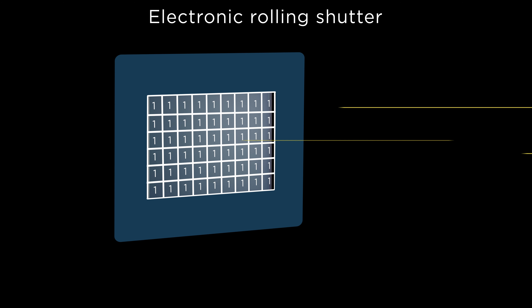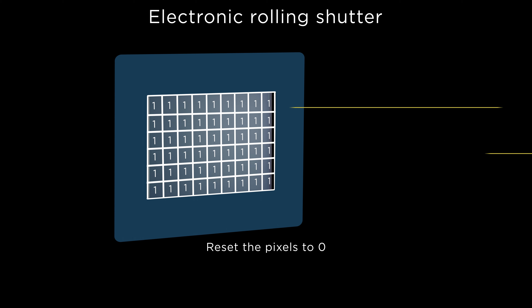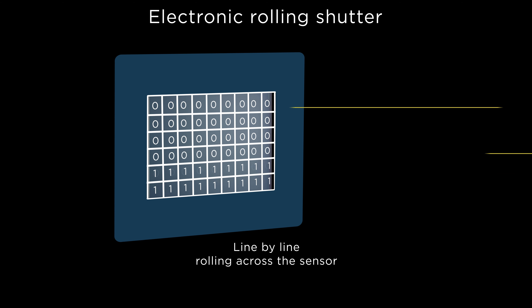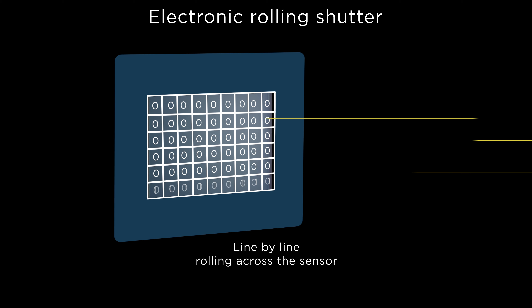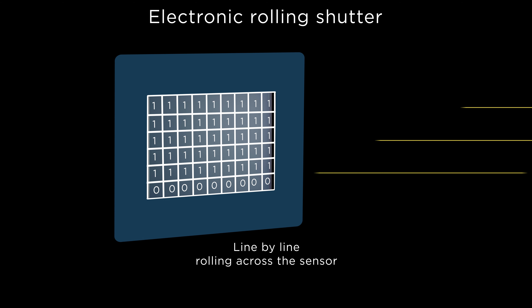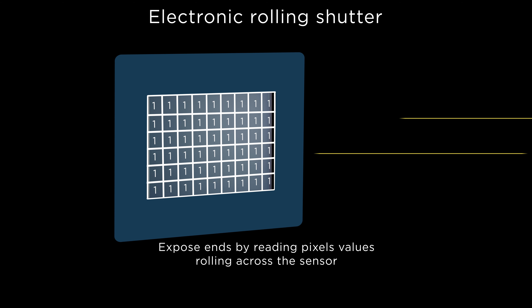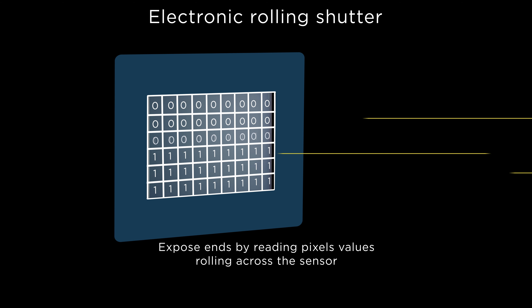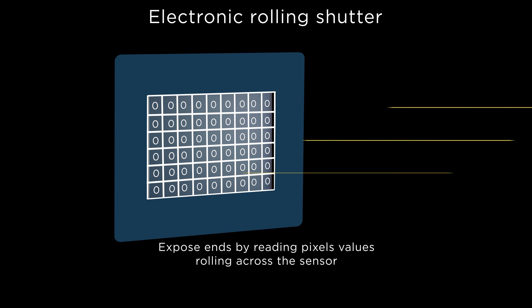An electronic rolling shutter basically works the same way as a focal plane shutter. The lens is open and light falls onto the image sensor and accumulates in the pixels. The exposure is then started by resetting the pixels back to zero. This is done line by line, rolling across the sensor, with the exact same speed as the exposure is ended by reading out the pixel values, also rolling across.